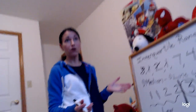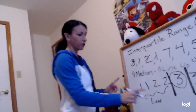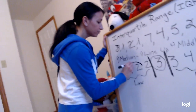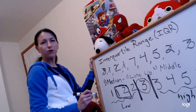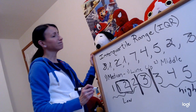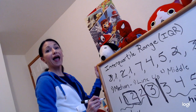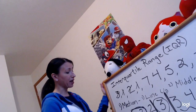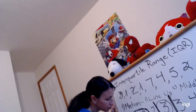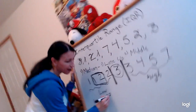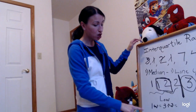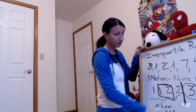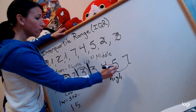Now I find the middle of both groups. There are four numbers in the lower group. When you have two numbers in the middle during a median, you're not allowed to keep two — you add them together and divide by two. One plus two is three, three divided by two is 1.5. So that is my lower quartile median.